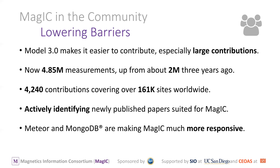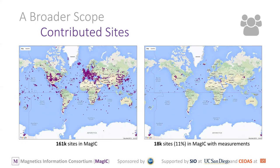We are actively identifying newly published papers suited for MAGIC — if you get an email from us saying we like your paper, please archive it. The use of Meteor and MongoDB is making MAGIC much more responsive with web-based searches. The data are well distributed with a lot of continental and oceanic data. However, only 11% of the total sites have measurements associated with them, so there's clearly a lot more we could do in terms of getting measurements into the database.